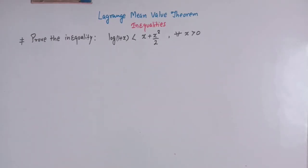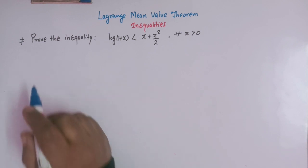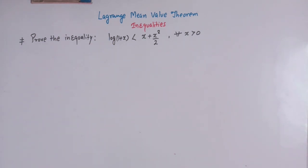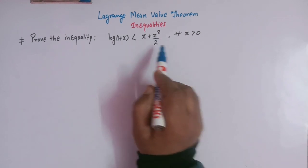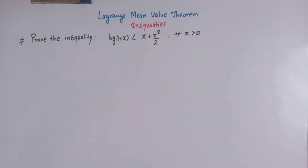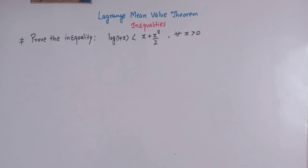Hello viewers. In today's class we are going to discuss one important application of Lagrange's mean value theorem. We'll prove this inequality with the help of Lagrange's mean value theorem: log of (1 + x) is less than x plus x squared over 2, for all x greater than 0. Lagrange's mean value theorem is a very important theorem in differential calculus, and one of its applications is to prove important inequalities.